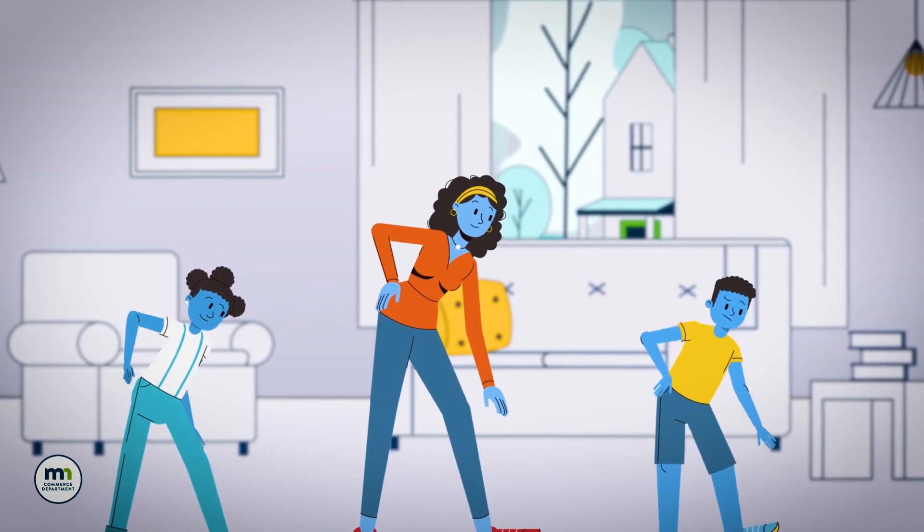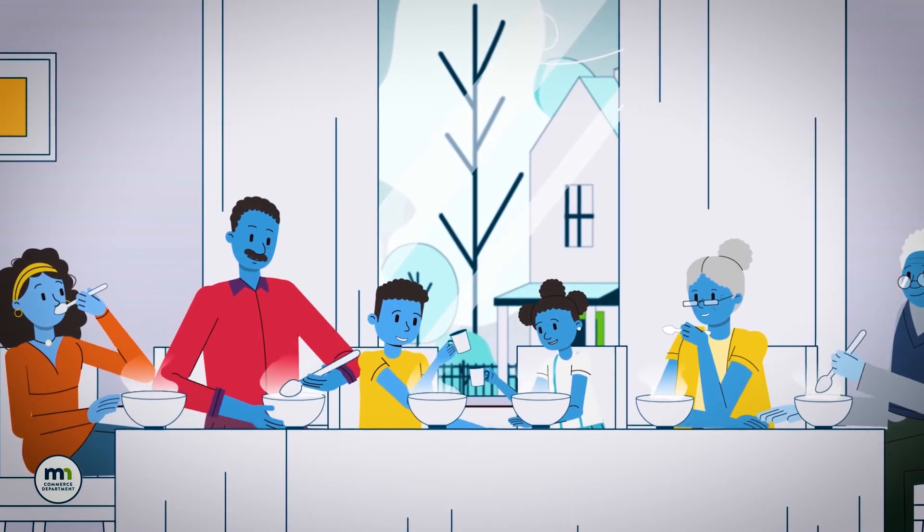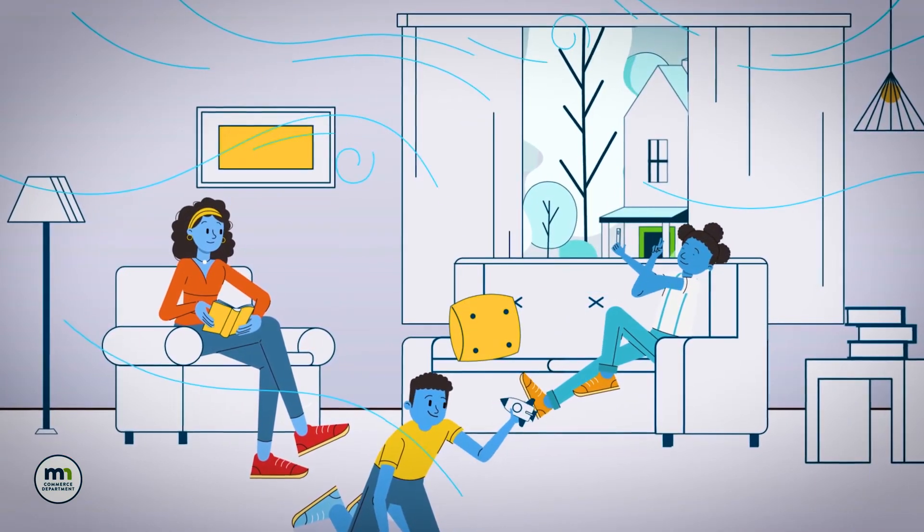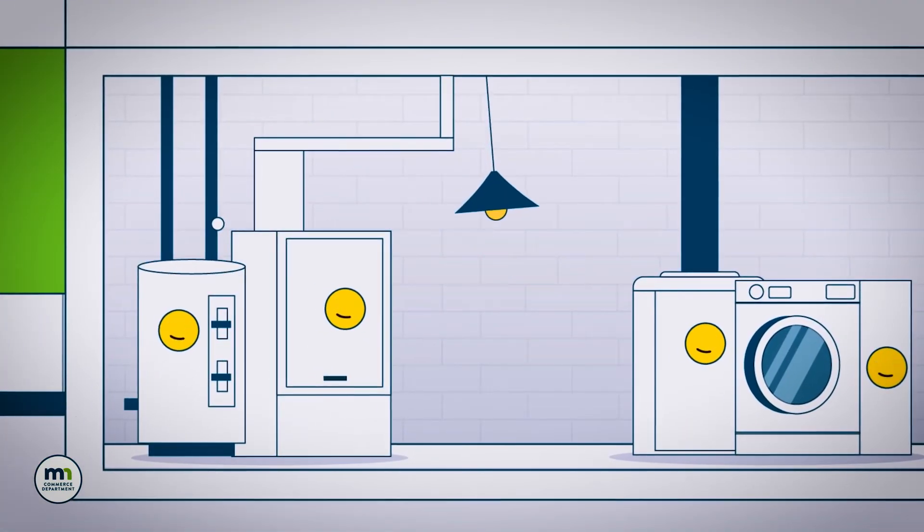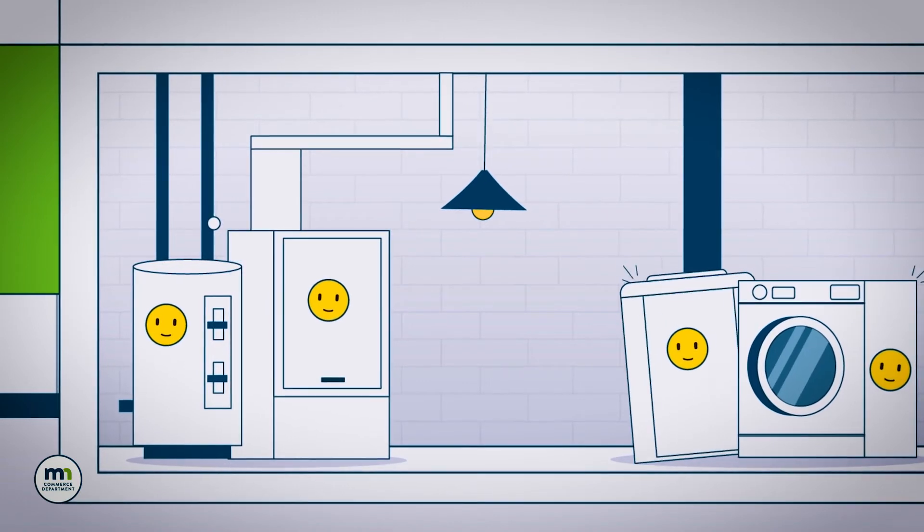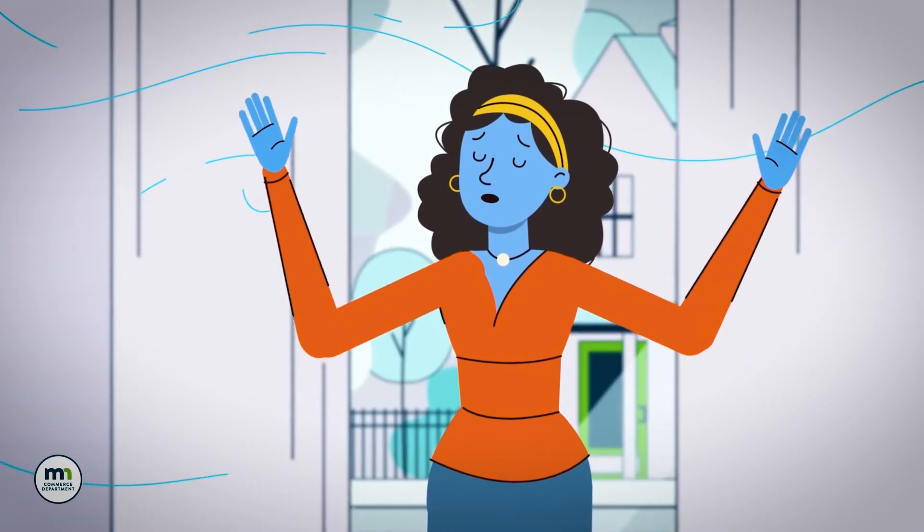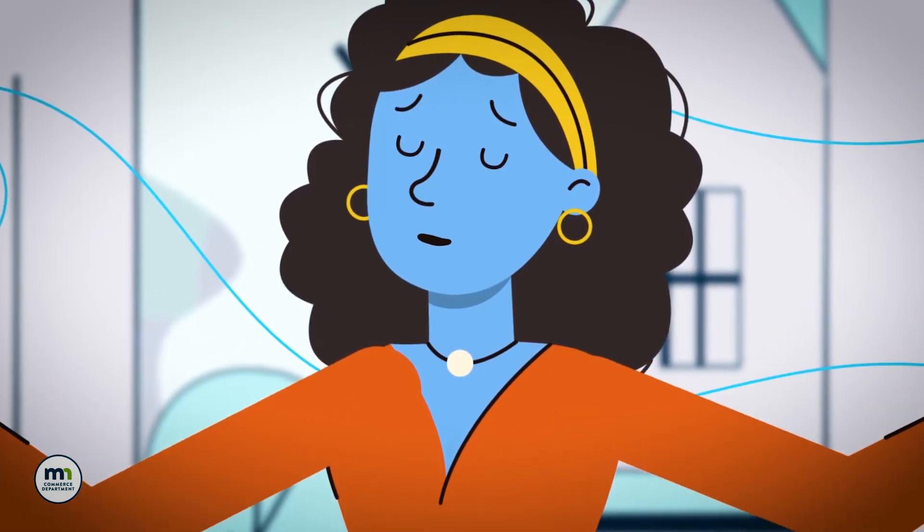Weatherizing your home can also improve the health and safety of all your family members. Improving the air quality of your home, ensuring proper operation of furnaces and water heaters, reducing hazardous conditions such as mold or mildew, can all help reduce the effects of asthma and other chronic diseases.